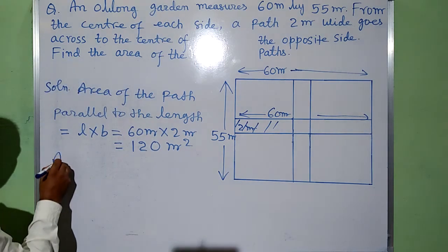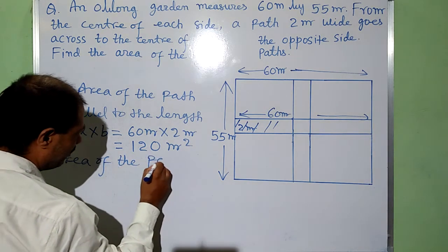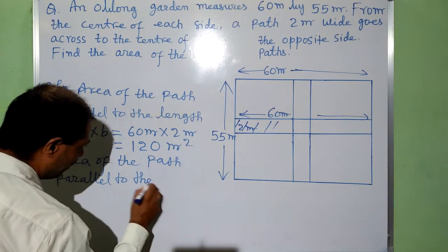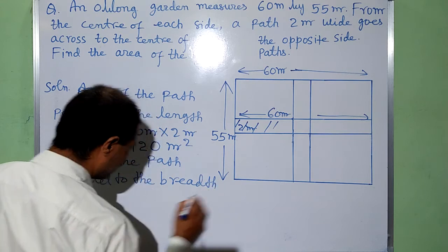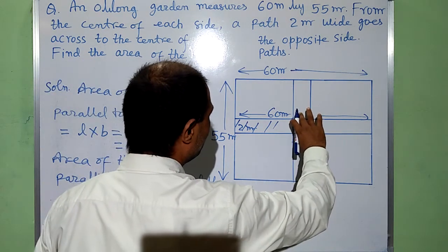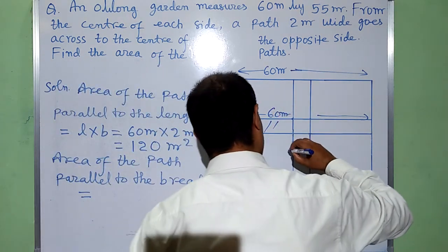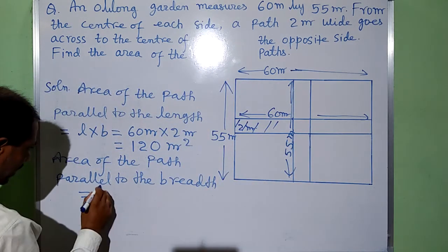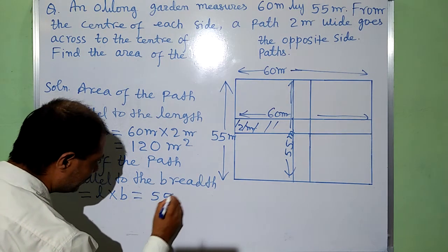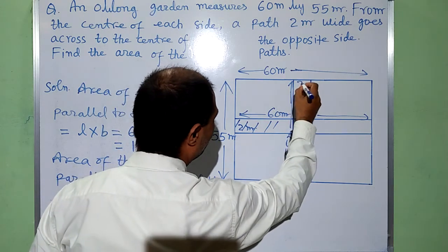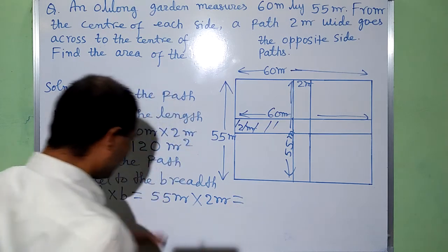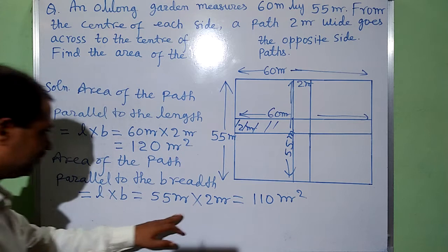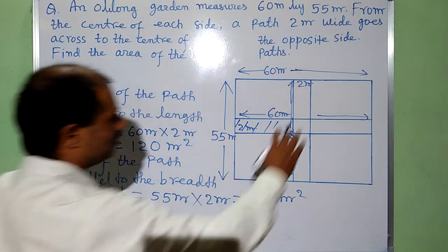And here is the area of the path parallel to the breadth. This path is parallel to breadth, so its length will be 55 meter. For this path, L into B: L is 55 meter and B is 2 meter. 55 times 2 is 110 meter square. In this way, area of this path is also obtained.